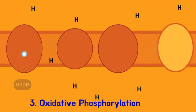As the electrons are transported, they pump hydrogen ions across the membrane, creating a high concentration. At the end of the electron transport chain, the electron bonds with oxygen to form water.